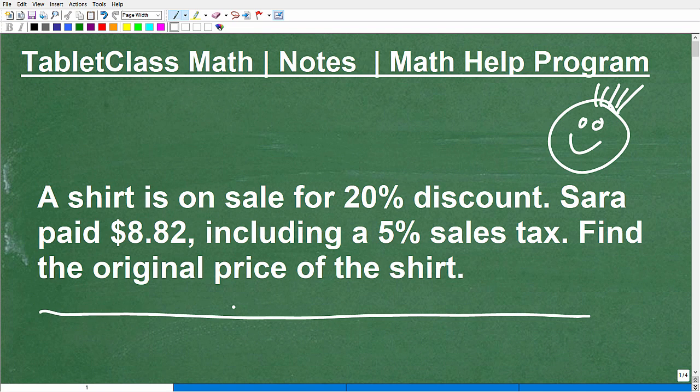Now, this particular word problem is obviously the topic for this video, but I have other videos on word problems in my algebra playlist on my channel. So if you are struggling with word problems, you definitely want to check those out. So we're going to get into this here in a second, but let's just read the problem. It says, a shirt is on sale for 20% discount. Now Sarah paid $8.82, including a 5% sales tax. So find the original price of the shirt. So that's what we want to do.